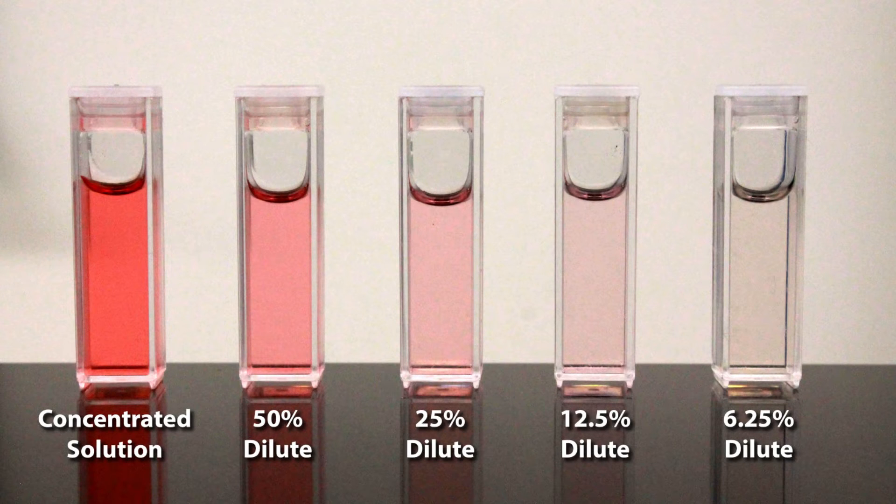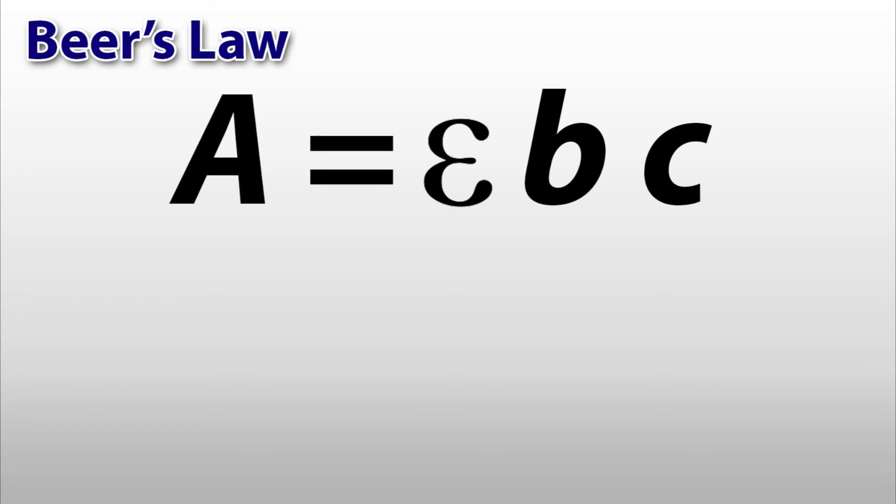In the lab, you are going to make several dilutions of a dye. You will notice that the most concentrated solution will be the darkest, while the more dilute solutions will get lighter and lighter. Beer's Law predicts this quite clearly.